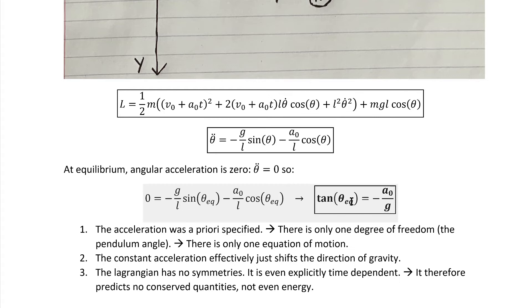The next thing to notice is what this equilibrium angle equation shows us. Normally for a pendulum, the equilibrium angle would just be zero, but it's shifted off of that by this non-zero acceleration. Basically, in effect, it shifts the direction of gravity, which is pretty intuitive.